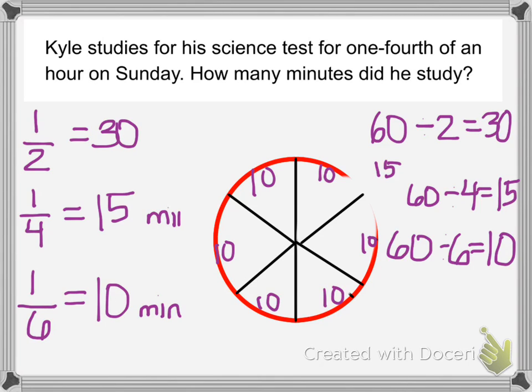So if you use this strategy, you could pretty much figure out any part of an hour. You don't even have to draw the picture. You can just think of it as splitting 60 into however many parts I need to split it in.